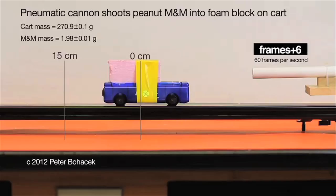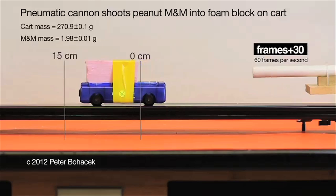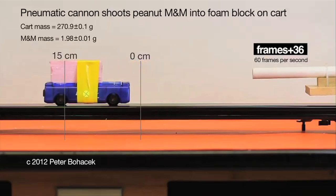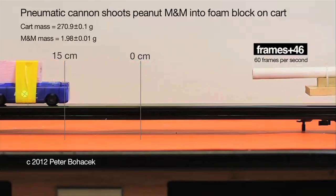Here, a peanut M&M candy is fired into a block of foam attached to a cart. Students can use the momentum of the cart to figure out what the velocity of the peanut M&M must have been.